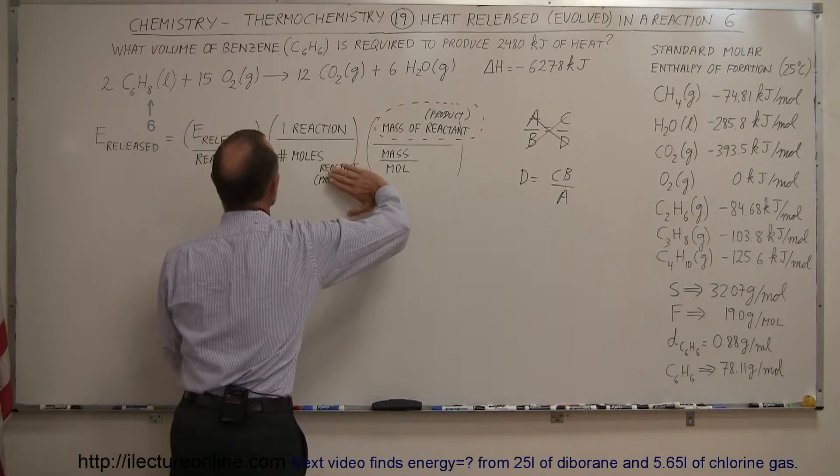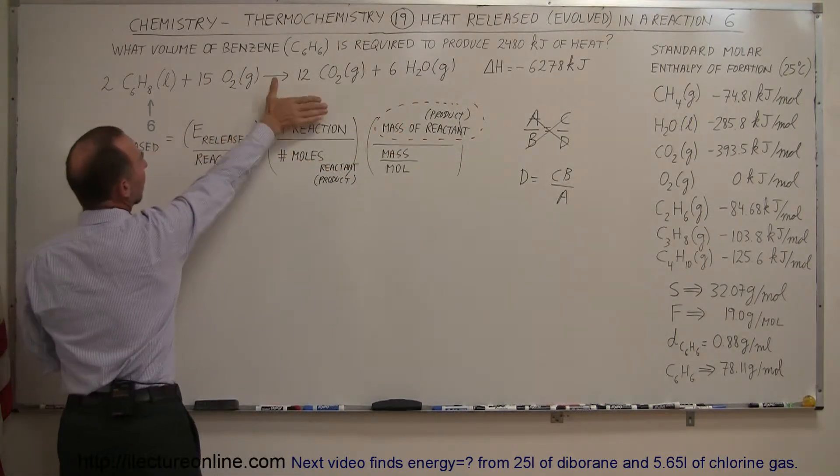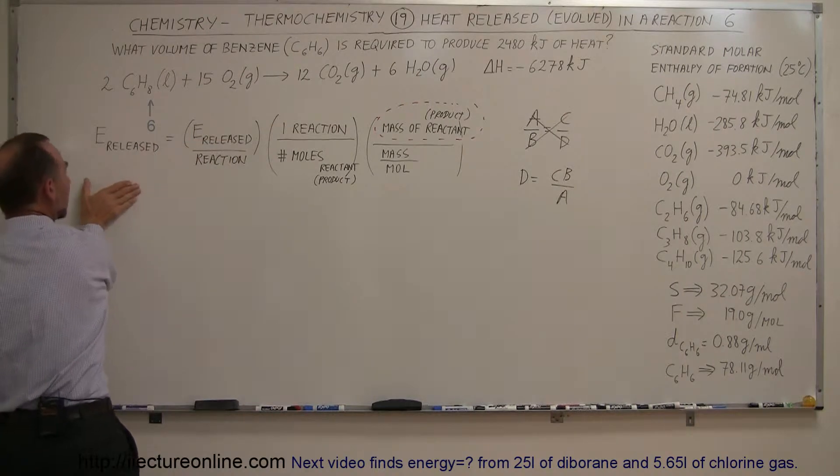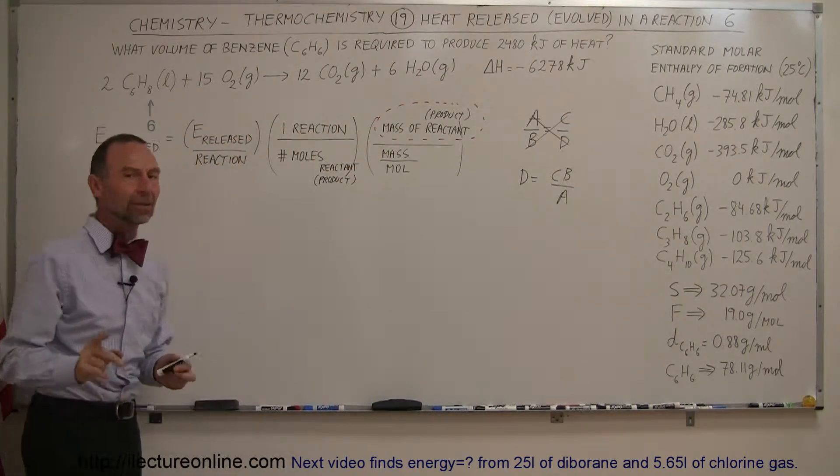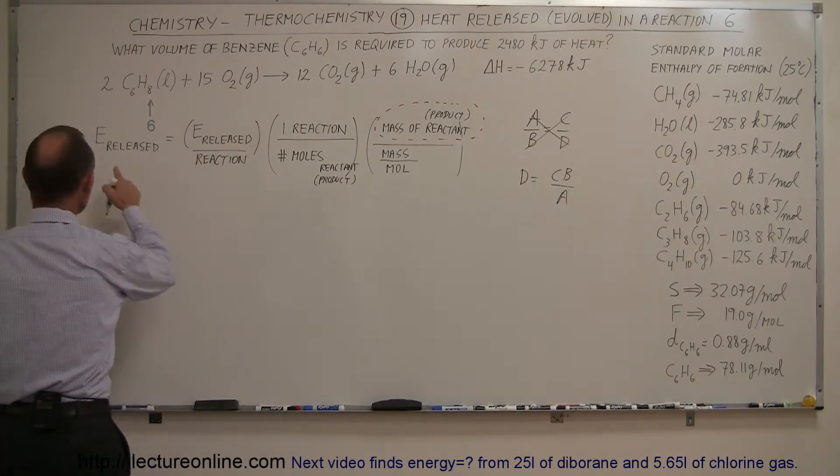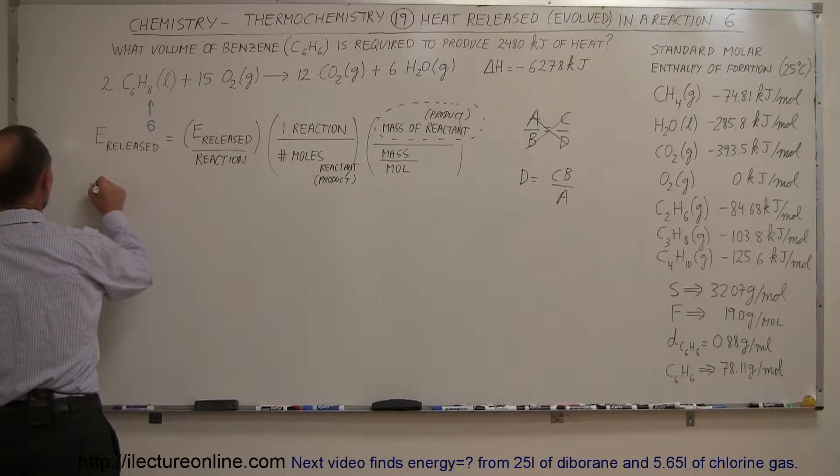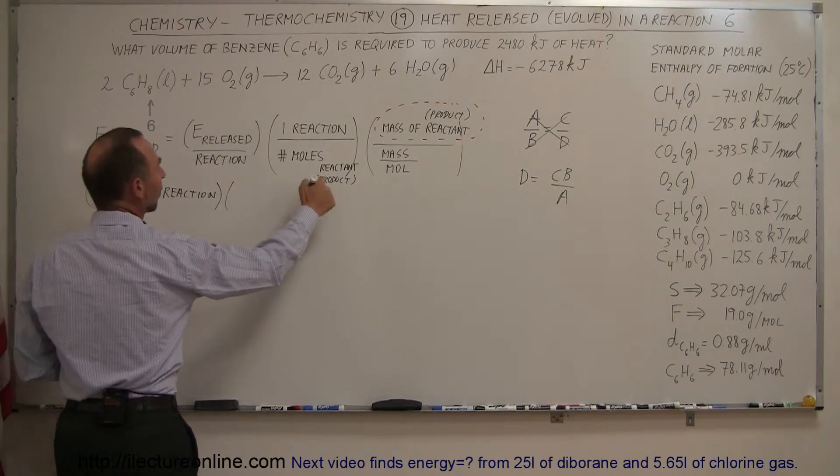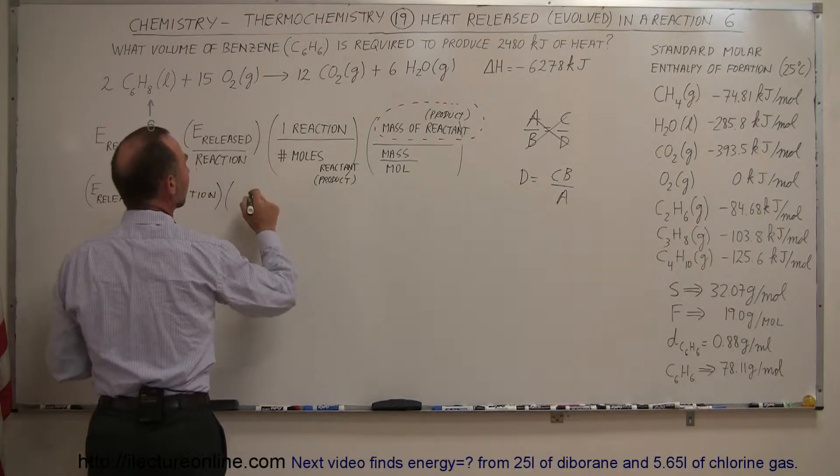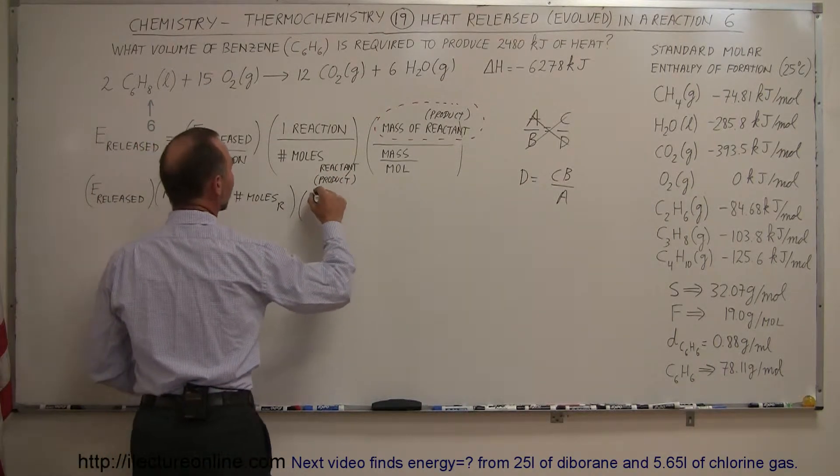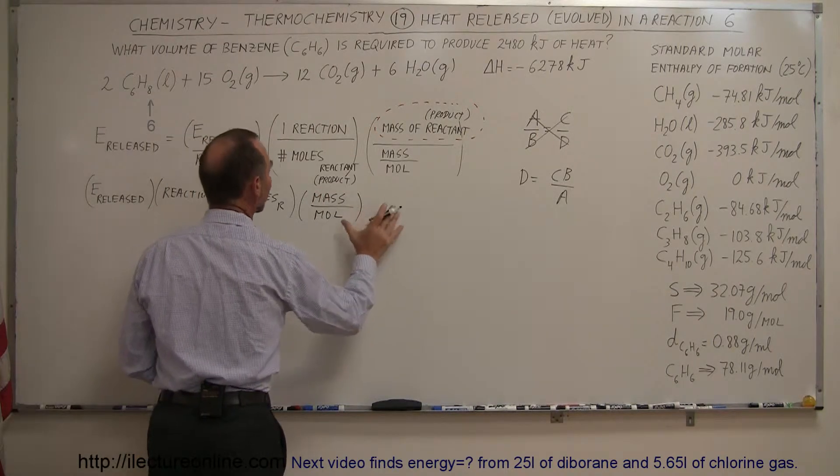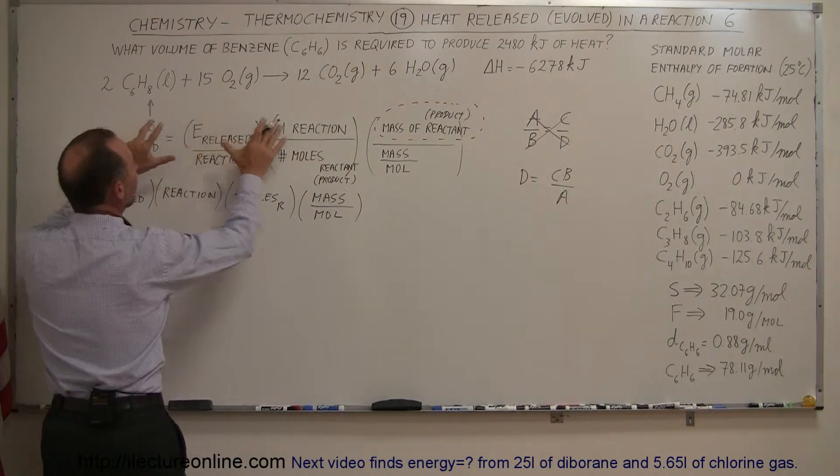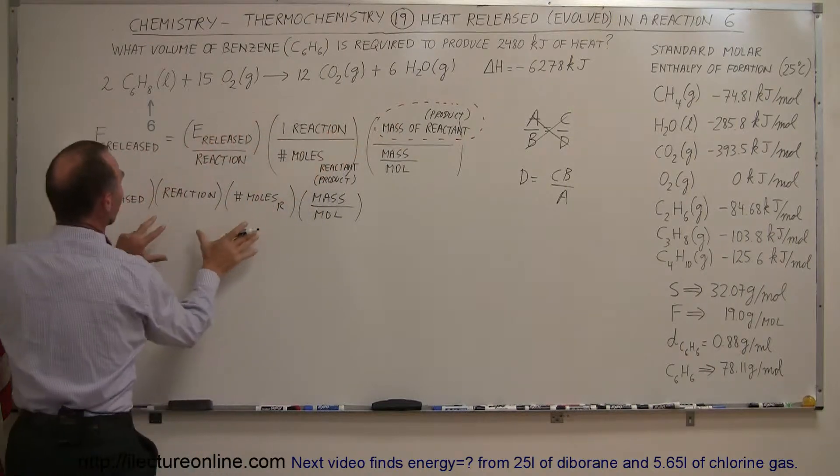Since we're looking for this, we're going to move everything on the denominator to the numerator here, and everything in the numerator here to the denominator here, to solve for the mass of the reactant. So we have the energy released is equal to one reaction times the moles of the reactant times the mass per mole of the reactant. So all this goes to the numerator, we take all this and bring it down to the denominator.